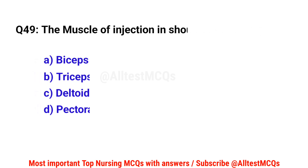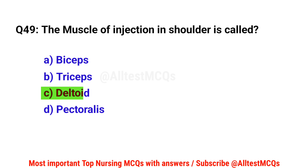Question number 49. The muscle used for injection in the shoulder is called? The correct option is C: Deltoid.